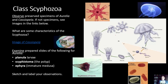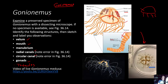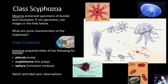Moving on to class Scyphozoa — the true jellyfish. A major characteristic distinguishing Scyphozoa from Hydrozoa is that the medusa stage is dominant and more well-developed. You'll examine preserved specimens of Aurelia and Cassiopeia. One of the largest invertebrate animals is a scyphozoan jellyfish with a medusa diameter of over two meters.